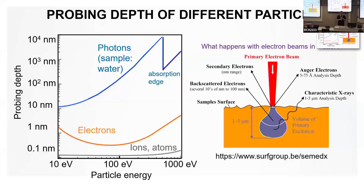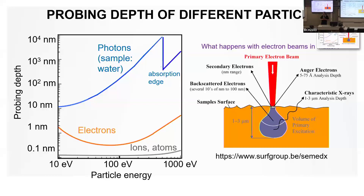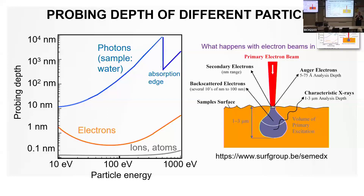Here is a trivia point: core electrons are designated by principal quantum number and orbital quantum number. A different nomenclature uses letters starting with K — the deepest core level is K, then L, M, and so forth. Why does it start with K? It's always K as the lowest. Did you ever ask why K and not some other letter?